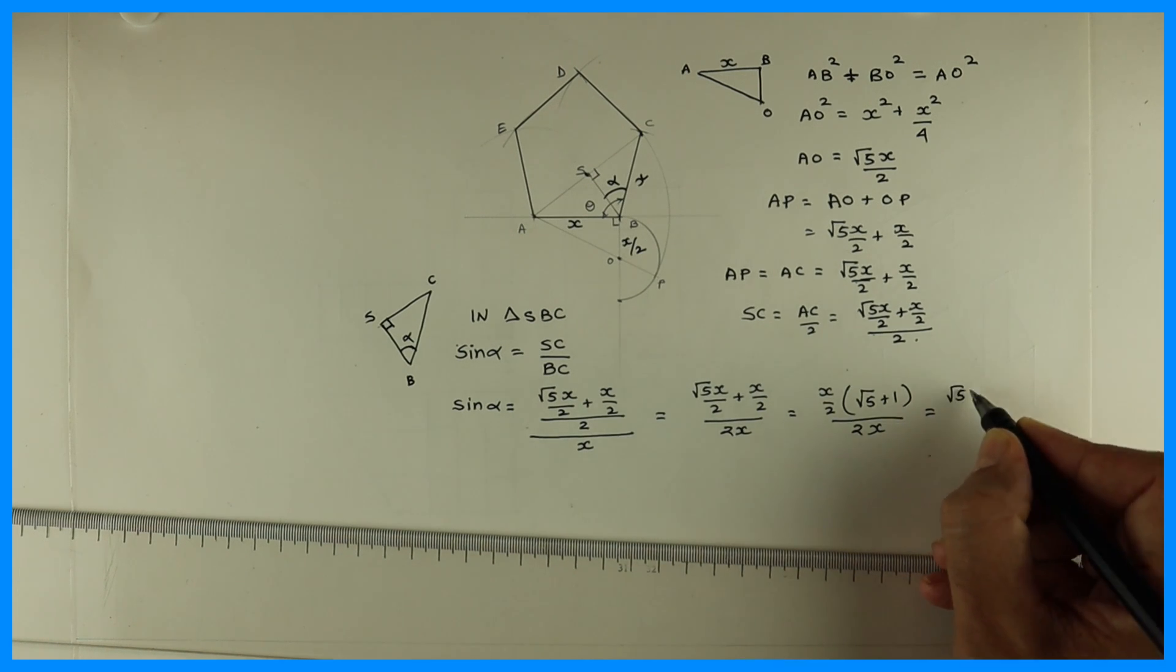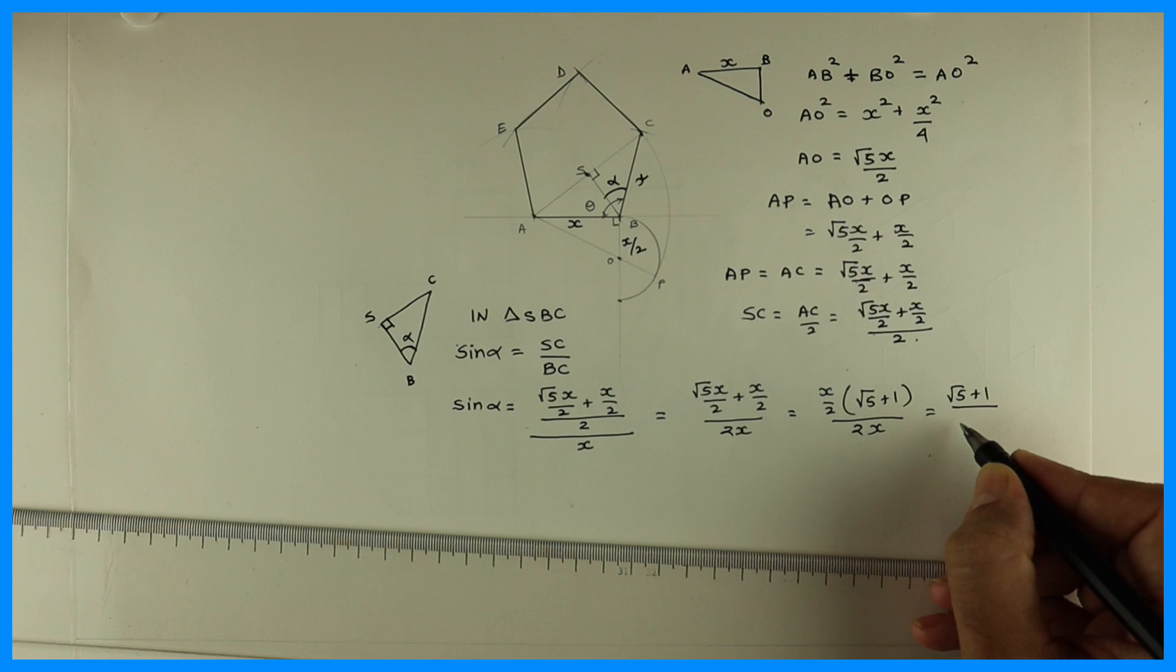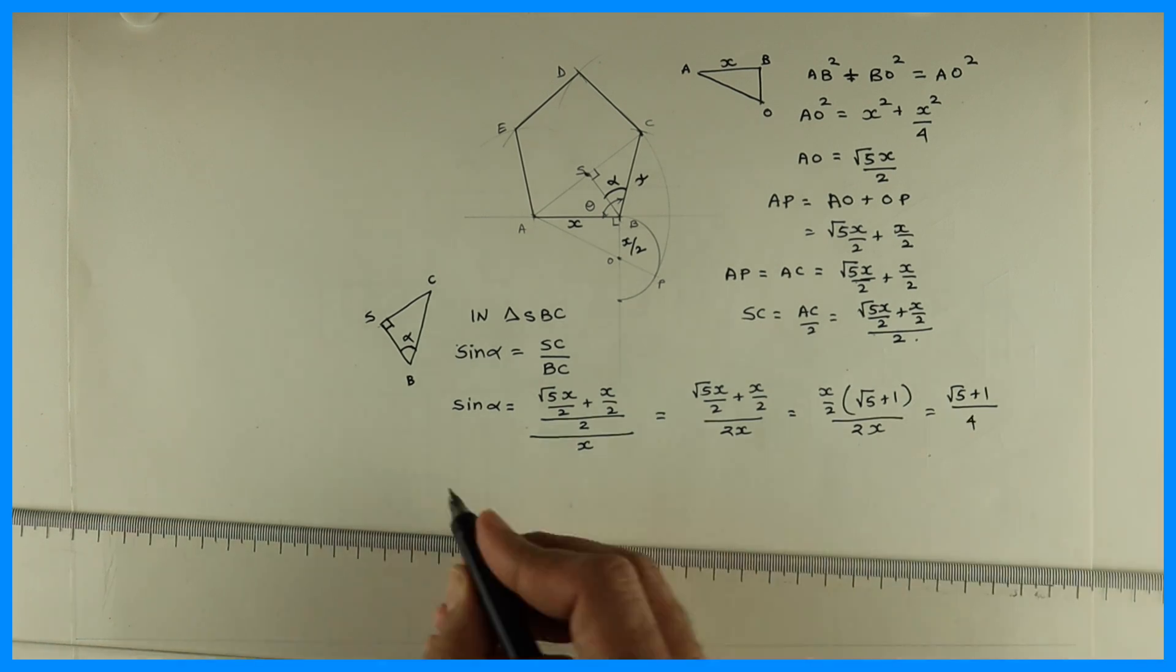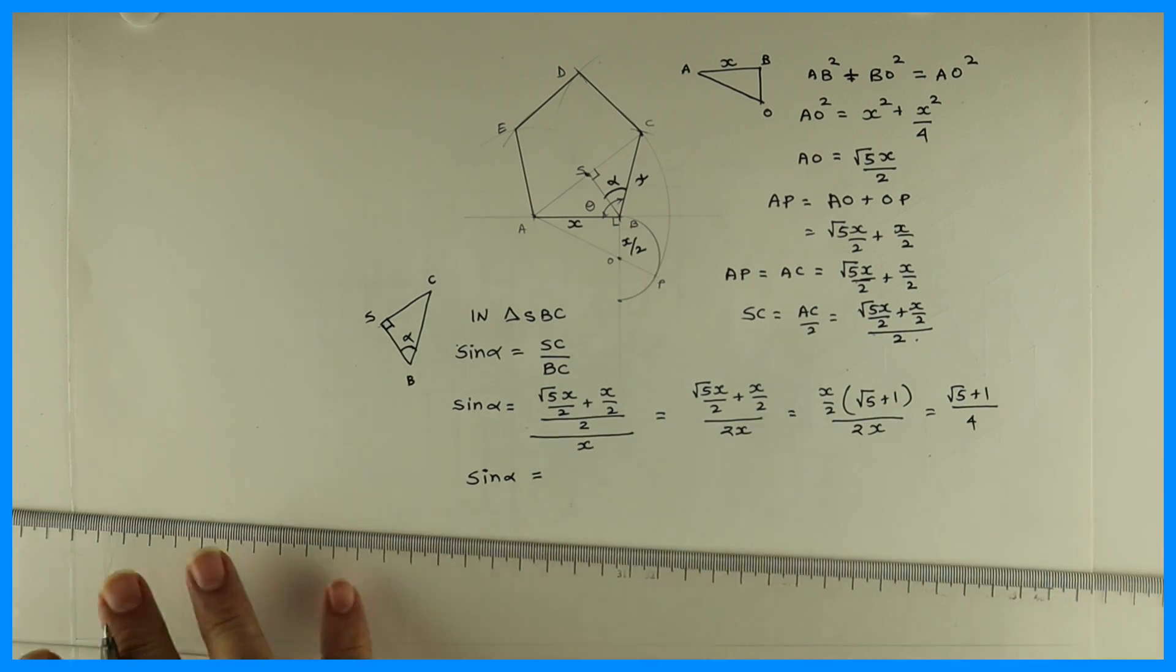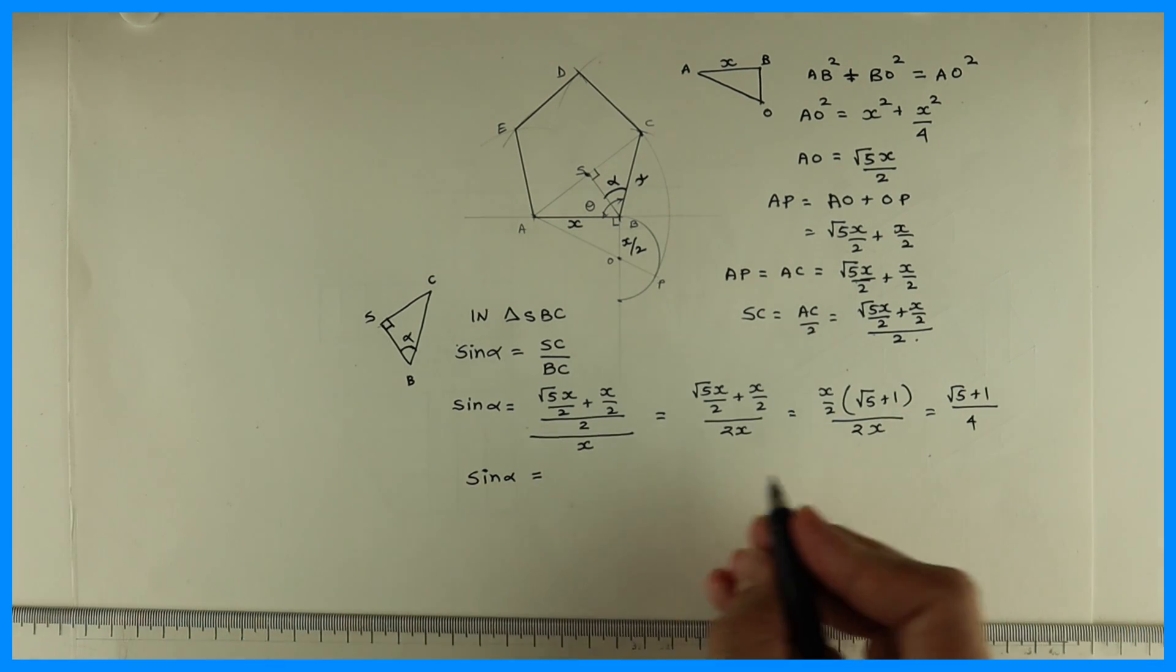So it would be under root 5 plus 1 upon 4. So sin alpha is equal to under root 5 plus 1 upon 4.